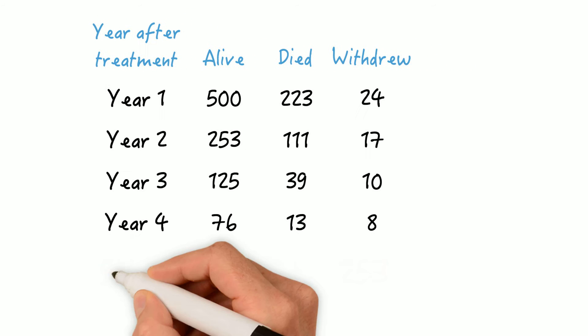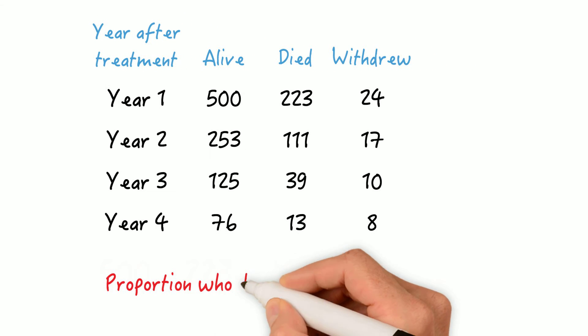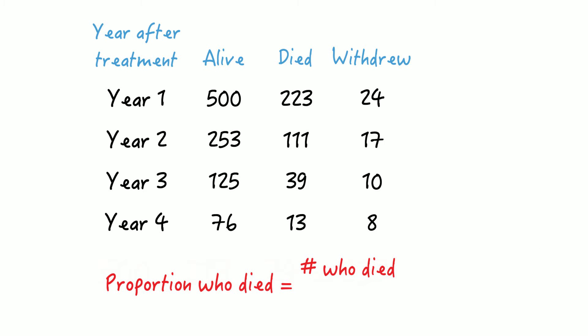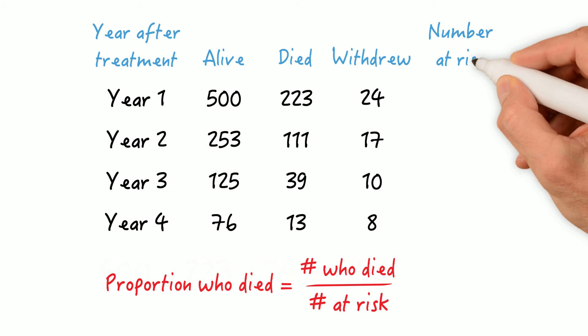Now, in order to calculate the proportion of participants who died in each year, we need to know the number of people who died in that year and divide that by the number of people at risk in that year, right? We know the number who died, but how many people were at risk during year 1? We know that 500 joined at the beginning of that year, but we also know that 24 left throughout the year. So what are we to do?